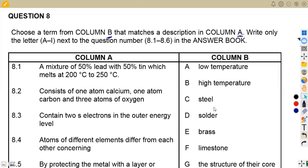Do not write what is just the letter A to I next to the question 8.1 up to 8.6 in the answer book. 8.1 from column A, we are given that a mixture of 50% lead with 50% tin which melts at 200 degrees Celsius to 250 degrees Celsius. Which material is that? Which mixture is that?